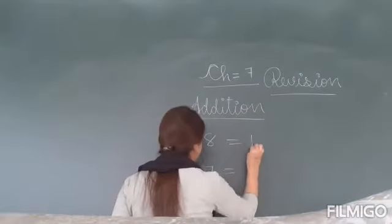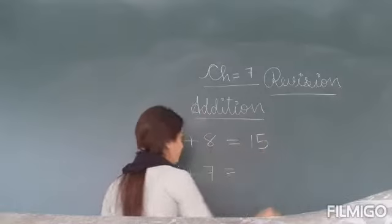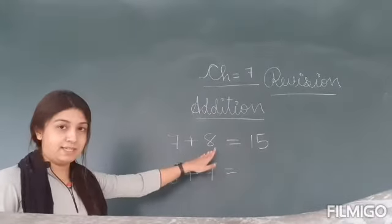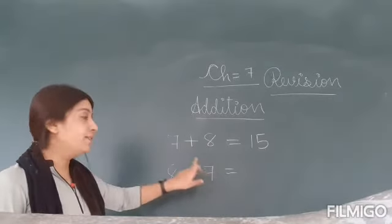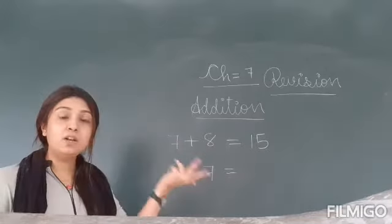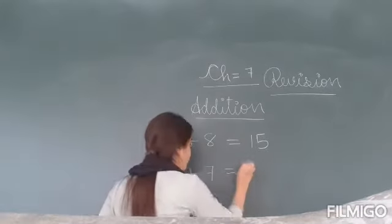So 7 plus 8, 15 will count. Ok students. 7 plus 8. Now 8 plus 7. So 7 plus 8 is 15. Then 8 plus 7 also will count 15.